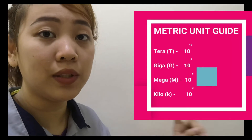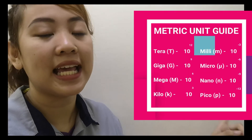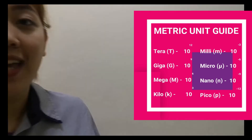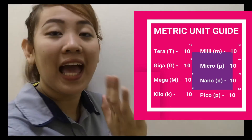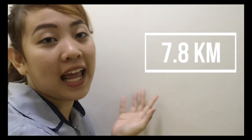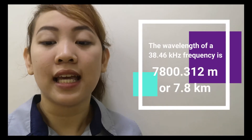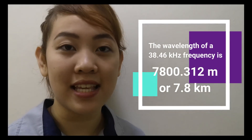Now let's convert it into kilometers. You have to multiply it by 10 raised to 3. Now we have 7.8 kilometers. So the wavelength of a 38.46 GHz signal is 7.8 kilometers.